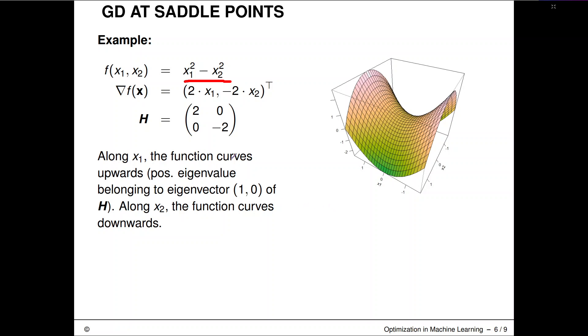To explain this in terms of the eigen spectrum: if you go along the direction of X1, you would see that the function curves upwards. So just that slice function, if you move along X1, this is convex. If you move along this direction, the function looks concave. The function would be sloped downwards.